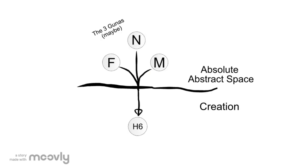Okay, so how is a hydrogen made for real? Well, you gotta go back to absolute abstract space. In this area of uncreation, we have something, or some things. One is masculine, one is feminine, and one is neutral. And when they come together, these three primary forces create. And the first thing they create is a hydrogen six.